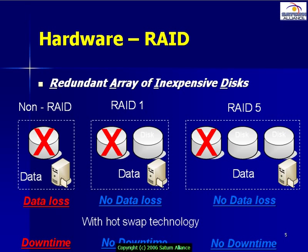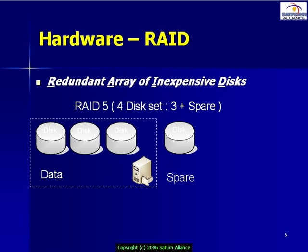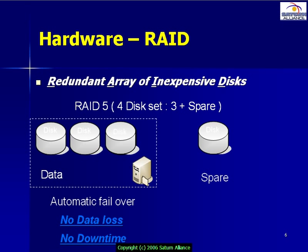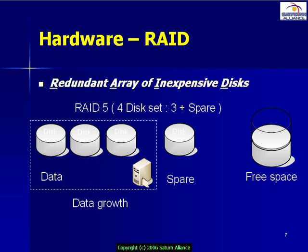You may ask: what are the advantages of RAID 1 versus RAID 5? I prefer to implement a RAID 5 system for the following reasons. If I do get a failure on a disk in a RAID 5 set configured with four disks — three plus a spare — when the failure occurs, the spare is automatically configured to take the place of the failed drive, meaning the RAID 5 set maintains its optimal capacity.